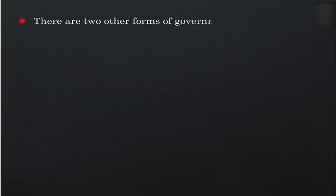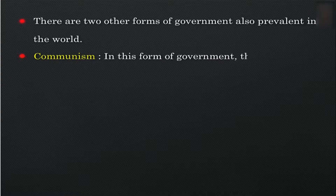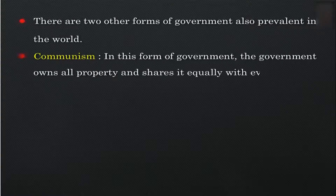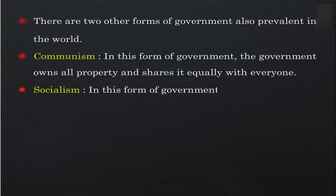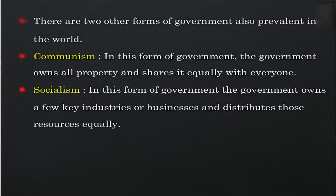There are two other forms of government also prevalent in the world. Communism — in this form of government, the government owns all property and shares it equally with everyone. Socialism — in this form of government, the government owns a few key industries or businesses and distributes those resources equally.